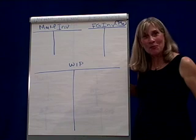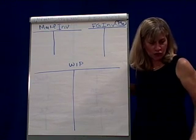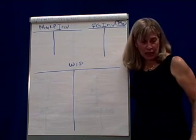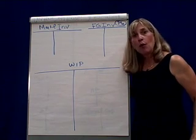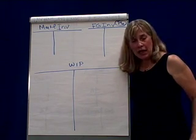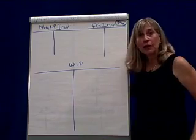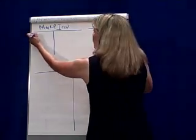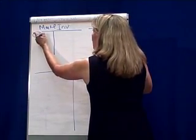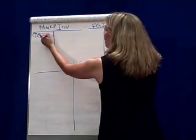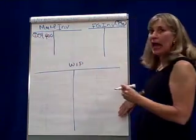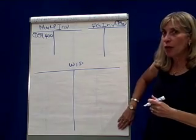The first one, on September 1st, it says we purchased direct materials on account for $59,400. Now when we buy direct materials on account, we debit material inventory. So on September 1st, $59,400 is our debit. And we bought it on account, which means that we need to credit.